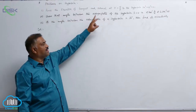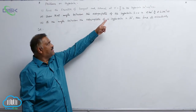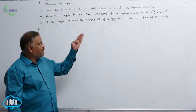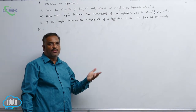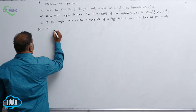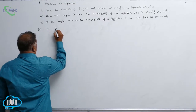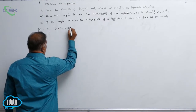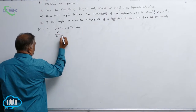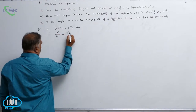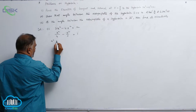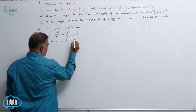Find the equation of tangent and normal at theta equal to pi by 3 to the hyperbola 3x² minus 4y² equal to 12. So first problem: 3x² minus 4y² equal to 12 can be written as x² by 4 minus y² by 3 equal to 1, giving a² equal to 4 and b² equal to 3.